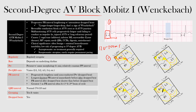In the second beat, there is a block beginning to occur. With that block, the PR interval starts to lengthen a little more. Comparing beats one and two, the second PR interval is a little longer. In the third beat, the block is getting thicker, and because of that, the PR interval is lengthening further.